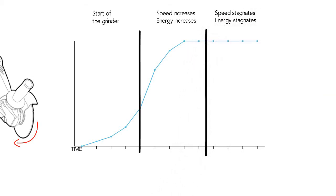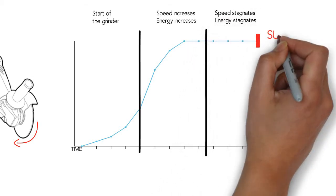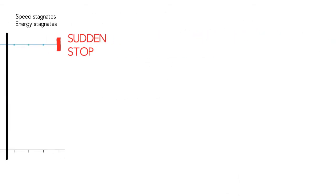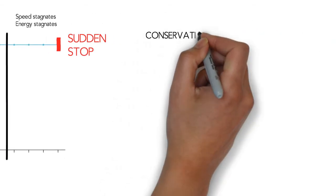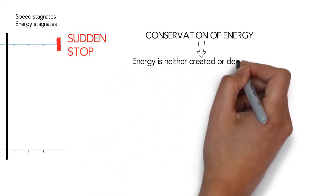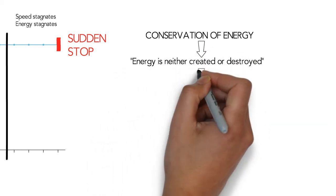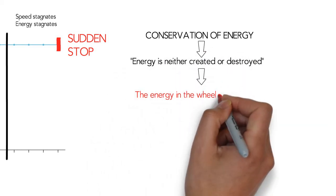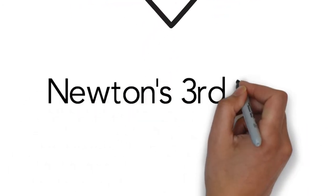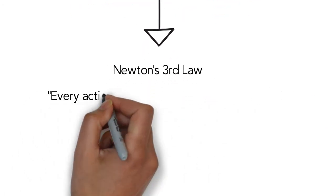Now let's imagine that the wheel has suddenly stopped. At that point, the energy is still high. The law of conservation of energy, which states that energy is neither created nor destroyed, assures us that the energy in the wheel is still present. But what will it do?